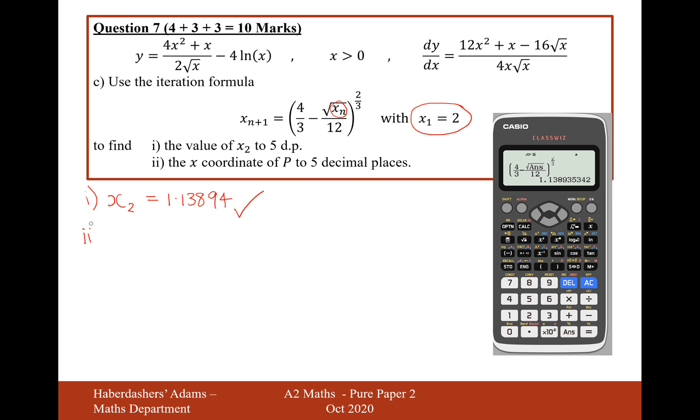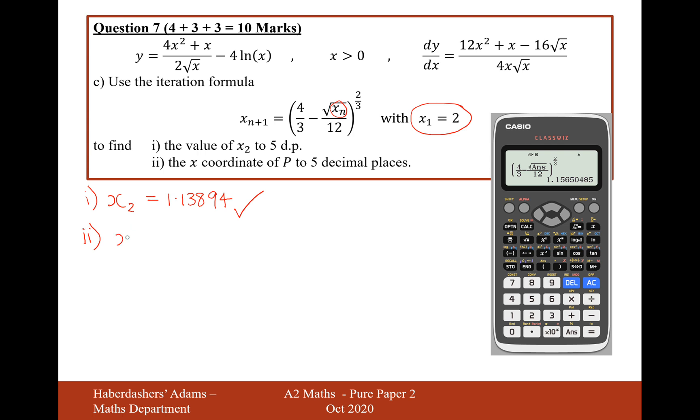Now moving on to the second part here, find the x-coordinate to five decimal places. Well, what you have to do now is bash the equals button. Keep on bashing it until the number doesn't change on your calculator screen, because as you continue on the iterative process, the solution gets more accurate and more accurate. And that's going to give us x equals 1.15650 to five decimal places.